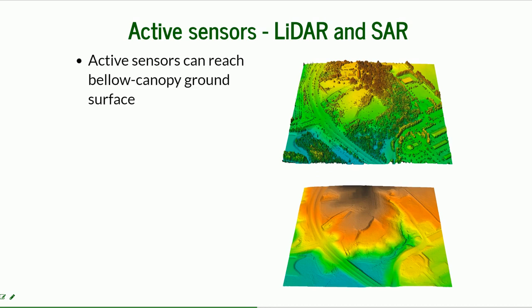There are also active sensors — we're going to focus on LiDAR and SAR, which are currently used in the UAS community. Active sensors not only capture information but also send an impulse and receive information back. This allows them to do things that simple optical sensors cannot, such as sensing below-canopy ground surfaces, since optics can only see what is visible and cannot penetrate a surface.